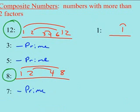Let's look at 1 again. This is kind of an exception, the only number like this. It had one factor. Is that more than two? No. So 1 is unique because it's neither prime nor composite.